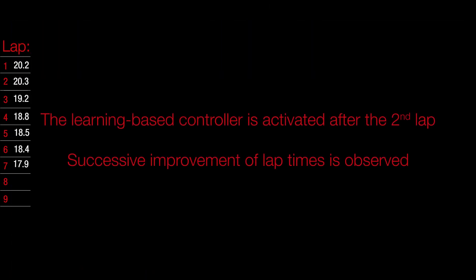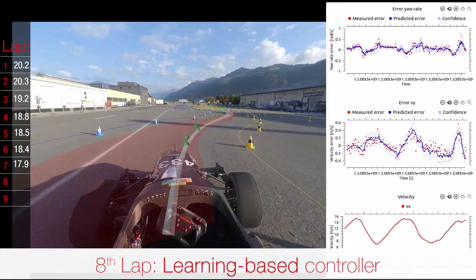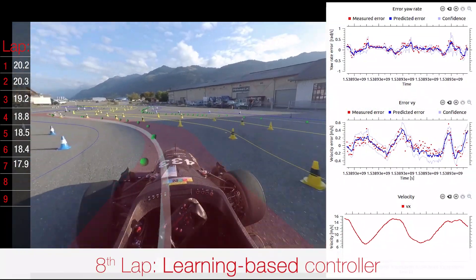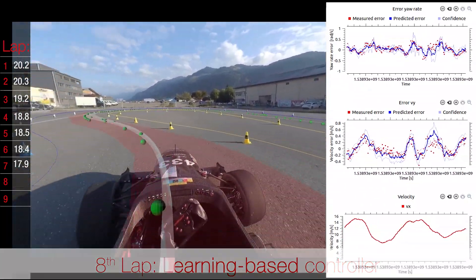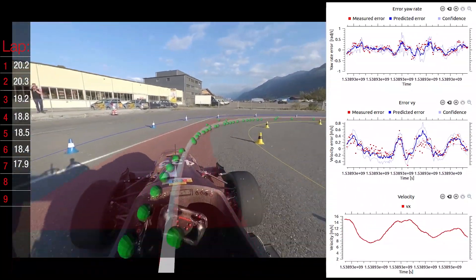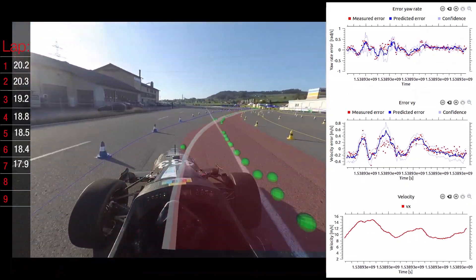The learning-based controller is enabled at the end of the second lap, and we observe successive lap time reductions due to the improved model, as this allows for more aggressive driving. In the eighth lap, we see the final result of the learning-based controller, achieving a significant lap time reduction, while safety of the vehicle is ensured at all times.